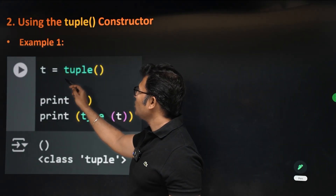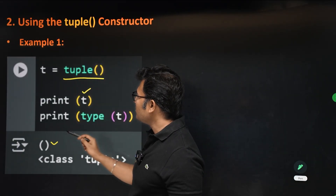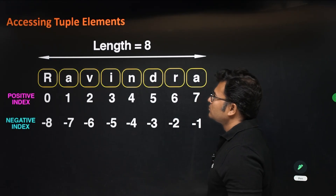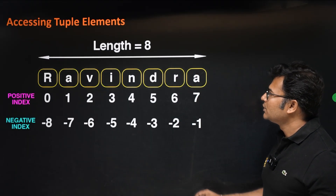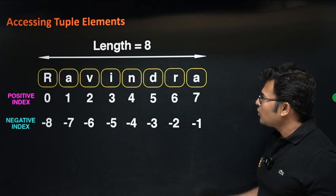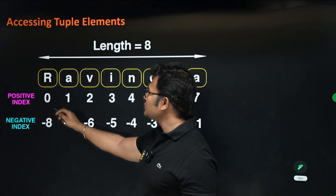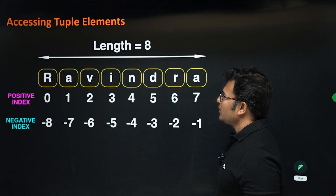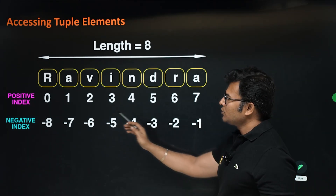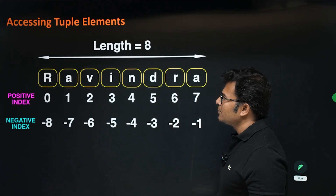If you write t = tuple(), print(t) gives an empty tuple and type(t) confirms it's a tuple. For a tuple like 'Ravindra', positive indexing works from 0 to len−1 (which is 7 for length 8), and negative indices work from −1 to −8. You can use either positive or negative indices to access elements.